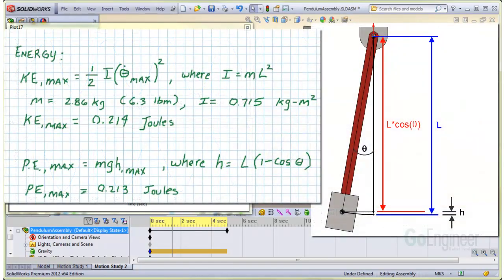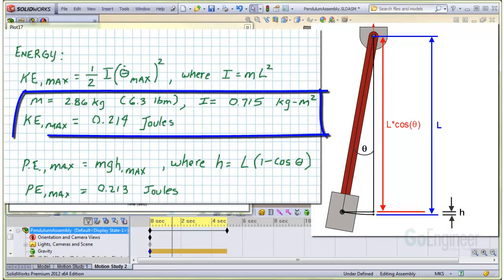Other useful output includes the energy of the system. We calculated the maximum kinetic energy as the pendulum swings through the bottom. Here's the mass of the bob and the mass moment of inertia. This comes to about 0.21 joules.